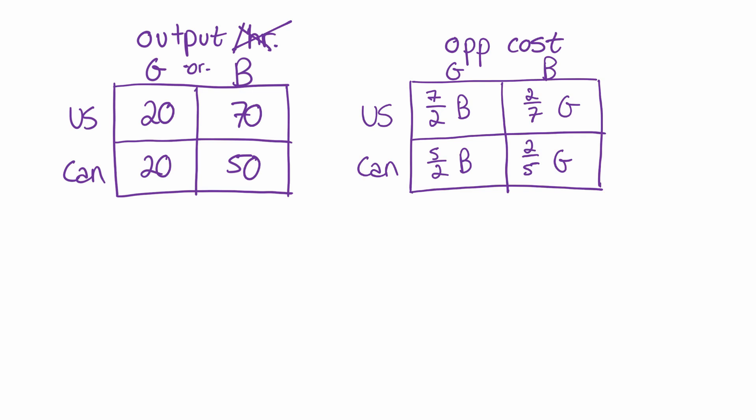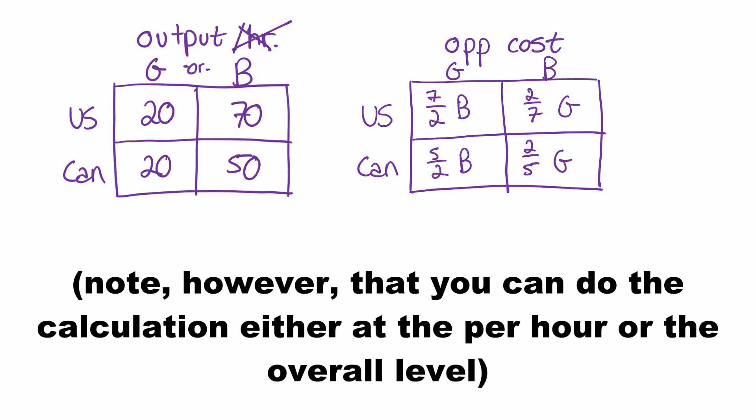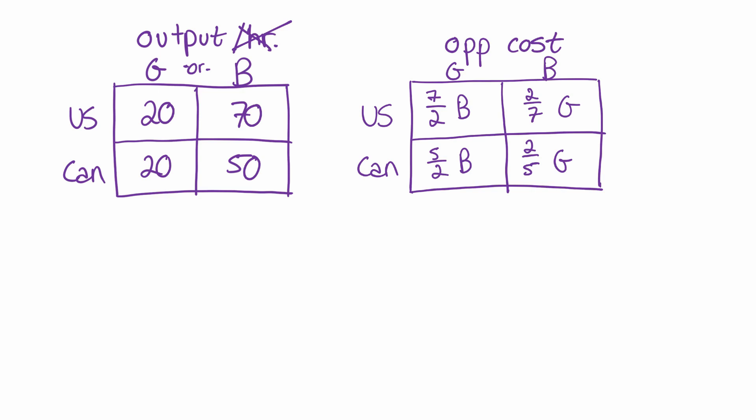Here we have the opportunity costs for each of the parties, for each of the goods. We can see here that the US has the comparative advantage in producing butter, because its opportunity cost of butter is two-sevenths guns, which is less than two-fifths guns.